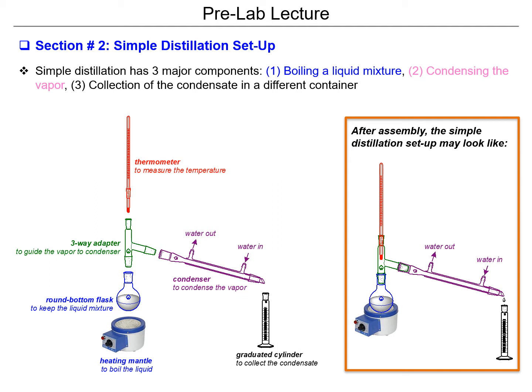So how is the distillation setup really assembled? We have two common distillation methods: simple distillation and fractional distillation. Simple distillation has three major components: the round bottom flask along with the heat source, which we use to boil the liquid mixture; the condenser to condense the vapor coming out of the round bottom flask after boiling; and a container — normally a graduated cylinder.